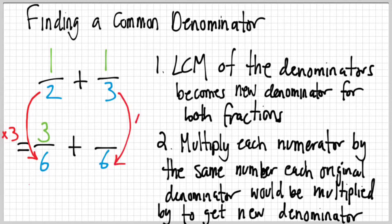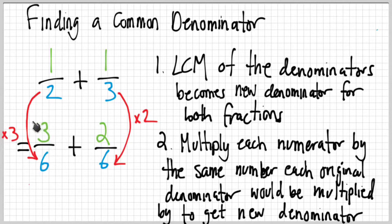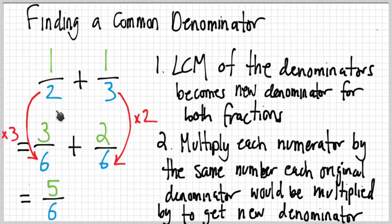For the other fraction: three times two is six, so one times two is two — that's our new numerator. Now we have equivalent fractions: three-sixths is the same as one-half. We haven't changed the problem, just made it look different. Now with a common denominator, the denominator is six and two plus three is five, so one-half plus one-third is five-sixths.